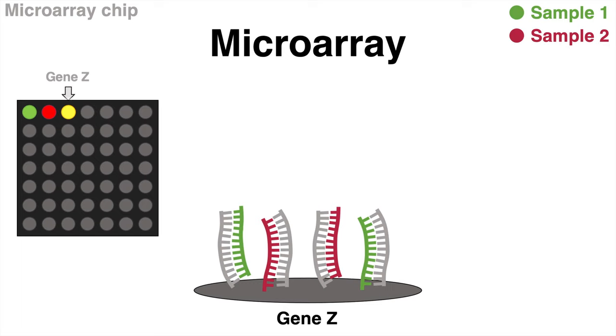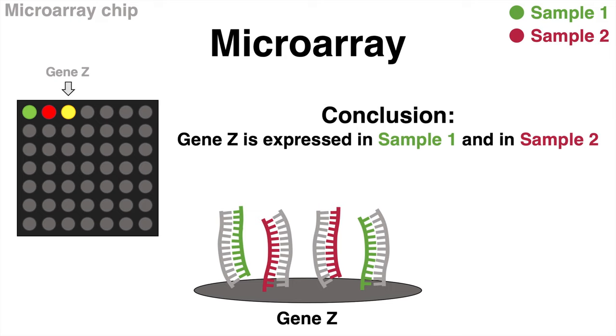After laser scanning, the spot of gene Z looks yellow, because both fluorescently labeled samples are present after washing. This result tells us gene Z is expressed in both samples, in the healthy tissue and also in the tumor tissue.